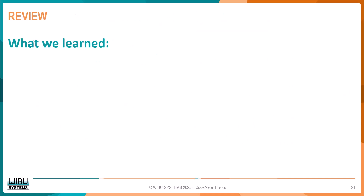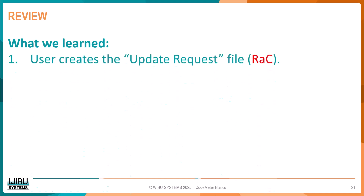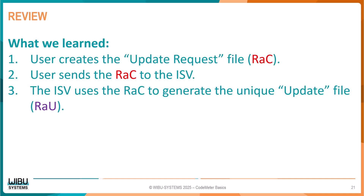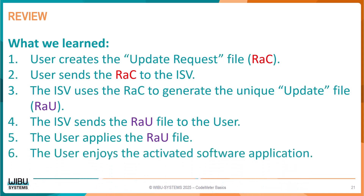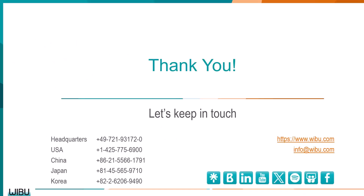Let's quickly review the steps we just learned. We learned how the user creates the update request file, RAC. Next, we learned that the user must send the newly created RAC file to the ISV. The RAC file is then used by the ISV to generate the unique update file, RAU. After creation, the ISV sends the RAU file to the user. Once received, the user applies the RAU file, and now the user enjoys the activated software application. Thank you. Please keep in touch.